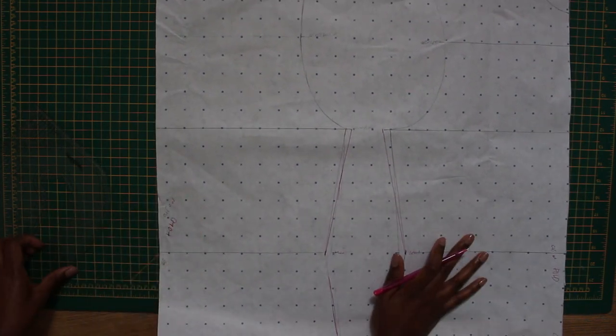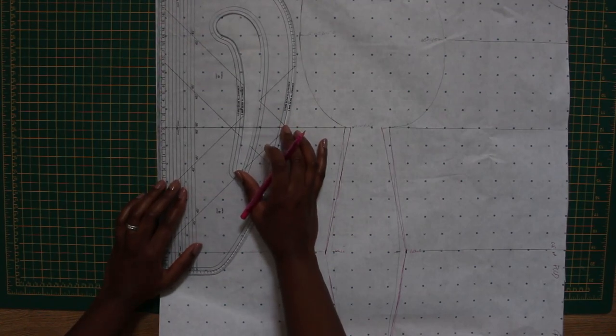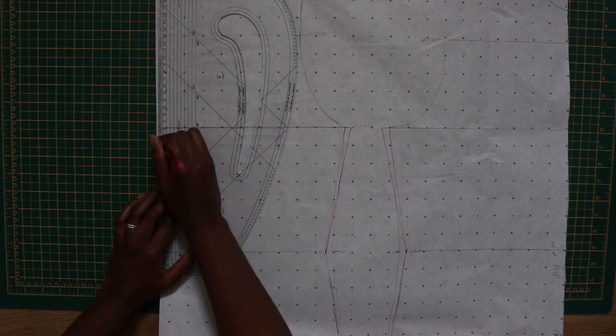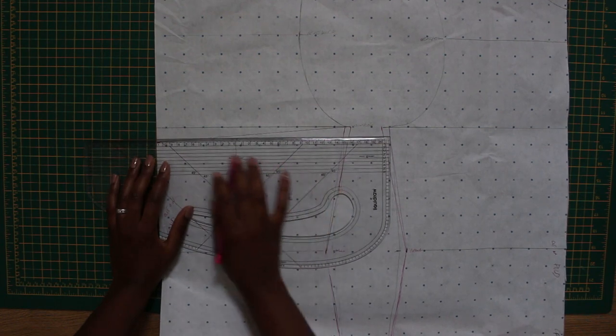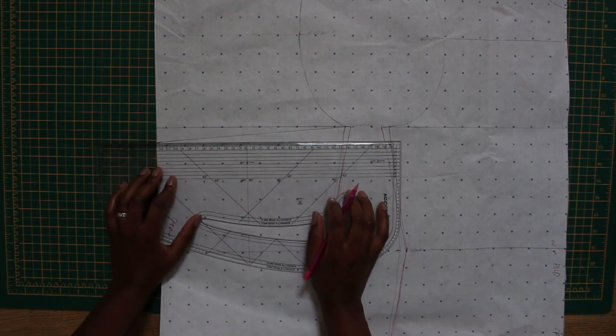Now since it's a slip dress, at the center back I'm gonna go down by like two centimeters. Let me take half of this, approximately where that is.